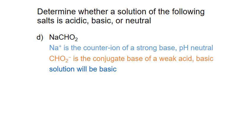We'll look at one last example — sodium formate. The cation sodium is the counter ion of the strong base sodium hydroxide, and is considered pH neutral. The anion formate is the conjugate base of the weak acid formic acid. It is considered weakly basic, and the solution will be basic overall.